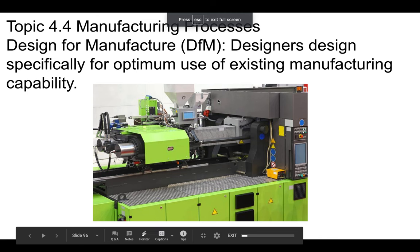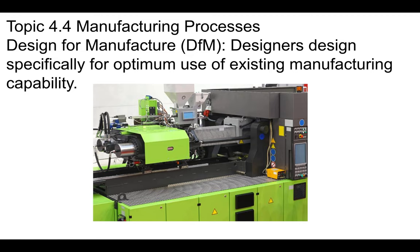Our next topic is manufacturing processes. One key thing to understand is that you need to do something called Design for Manufacture — designers design specifically for optimum use of existing manufacturing capabilities. For example, if you have an injection molding machine like this one, that capability is going to be something you consider in your designs.